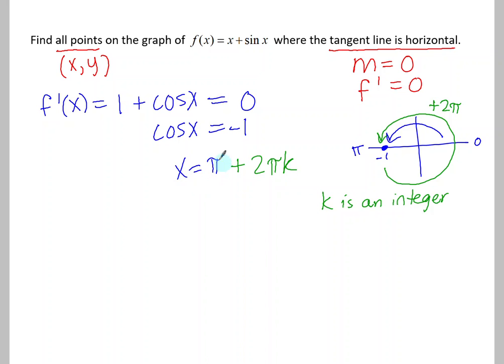we plug the x coordinate back into the function to find the y value. So we think f of pi, that was our first answer, would be plug in where the x is in the original function. So that's going to be pi plus sine of pi, which is pi plus 0 or pi.